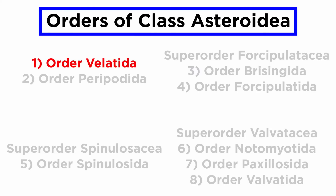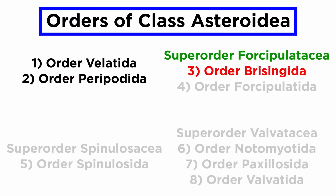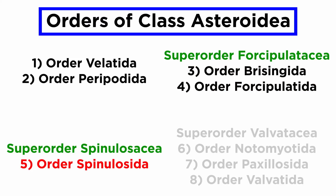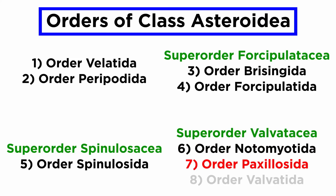We have order Velatida, order Peripodida, superorder Forcipulatacea which contains order Brisingida and order Forcipulatida, superorder Spinulosacea which contains order Spinulosida, and superorder Valvatacea which contains order Notomyotida, order Paxilosida, and order Valvatida. Previously, these three superorders were considered individual orders, and that may change again in the future, but let's briefly go over their diversity as it stands currently.